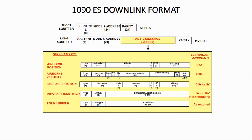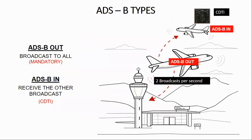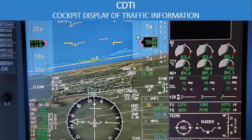Types of ADS-B: ADS-B Out is the transmission of ADS-B information out from an aircraft to other aircraft or to the ground station. The signal is broadcast at approximately every half a second. ADS-B In means the aircraft or ground receiver is fitted with an ADS-B transmitter as well as receiver. Cockpit display of traffic information is the onboard reception of ADS-B Out transmissions to allow display of nearby traffic, weather, terrain, and airport maps to the pilot of an ADS-B equipped aircraft.